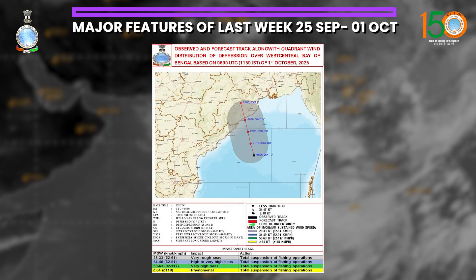There were two systems. We will start with the one system which is now lying over the northeast Arabian Sea as a depression. Initially a low pressure area formed over central parts of north and adjoining central Bay of Bengal on 25th September, and this system moved west-northwestwards and concentrated into a depression on 26th, over northwest and adjoining west central Bay of Bengal, off south Odisha and north Andhra Pradesh coast.